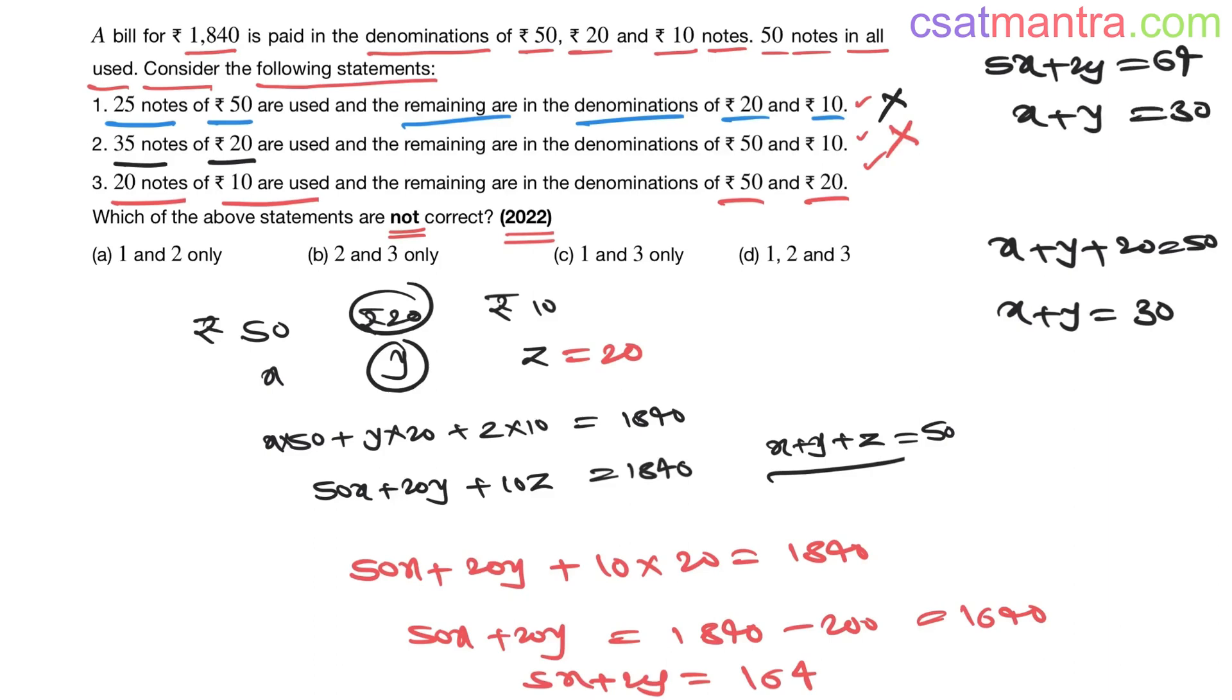Two equations: 5x + 2y = 164 and x + y = 30. I'm multiplying this equation with 2 on both sides, so that would be 2x + 2y = 60. Now subtract this from the first equation: 5x - 2x, that would be 3x.